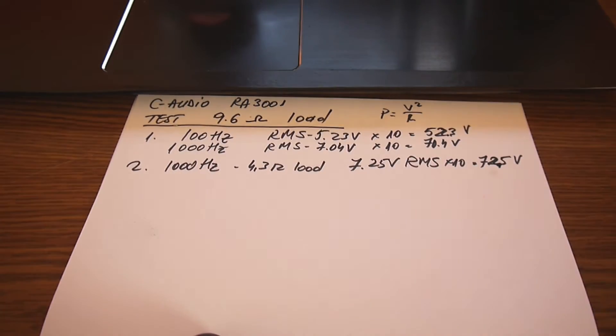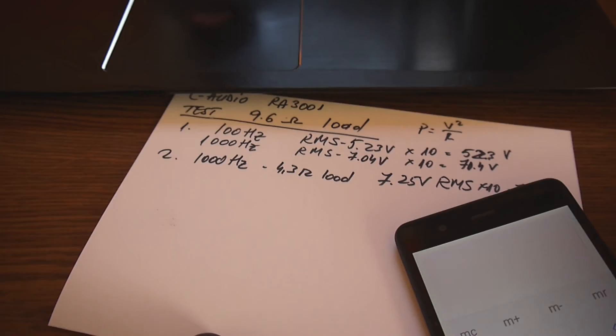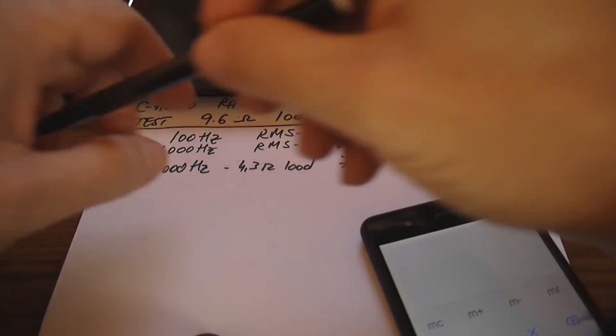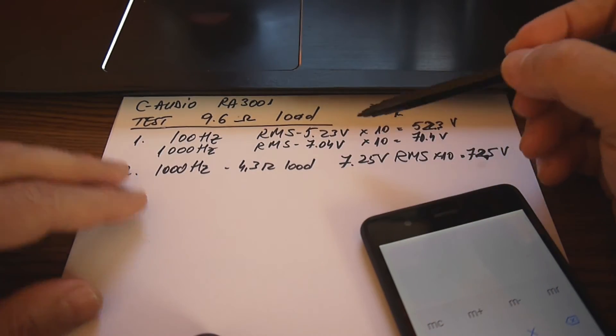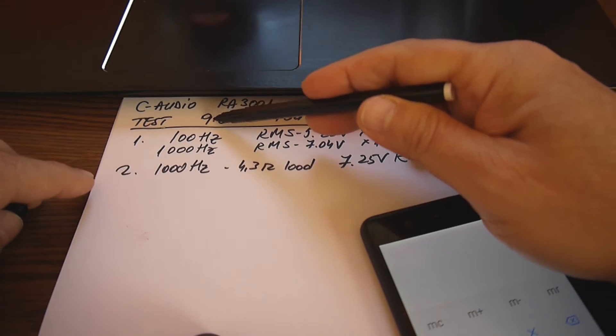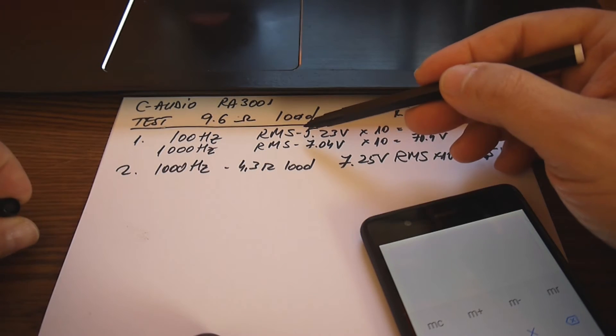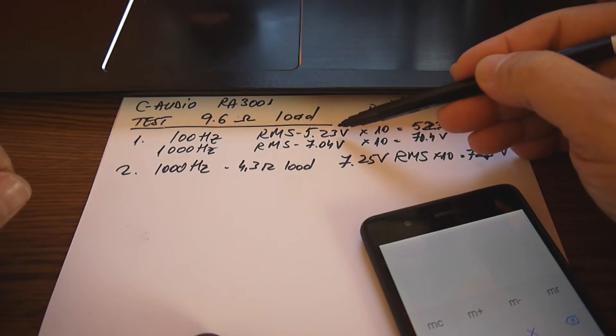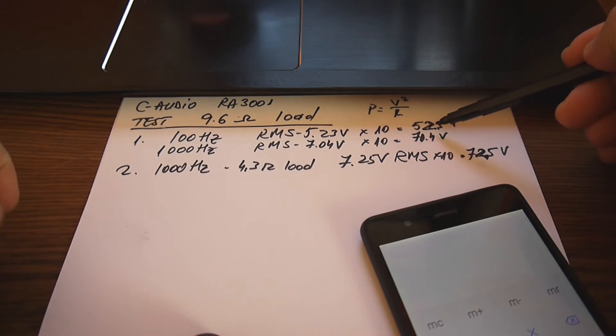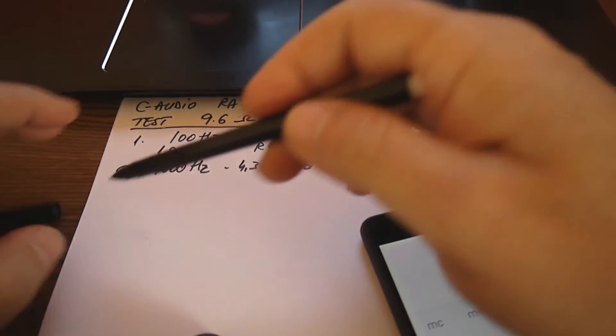Let's see the numbers. The first case: we have 100 hertz with a load of 9.6 ohms and we have RMS times 10, 52.3 volts, and that means